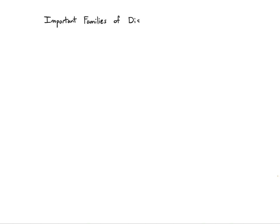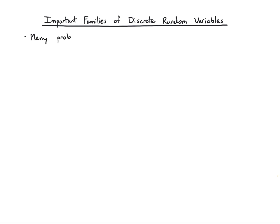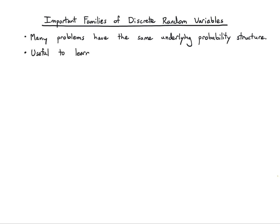Let's talk about important families of discrete random variables. So far we've understood what a discrete random variable is — it can be described by a probability mass function, and we've seen how to compute the mean and variance. Now let's simplify a lot of these calculations. Many of the problems we're interested in have the same underlying fundamental probability structure, and I can learn how to describe these scenarios with just a few families of random variables to avoid repetitive calculations.